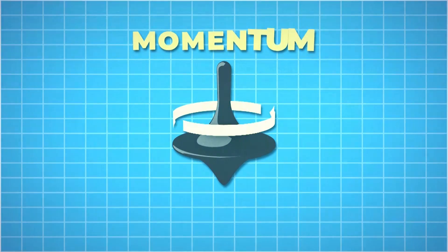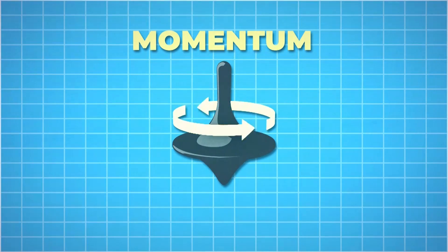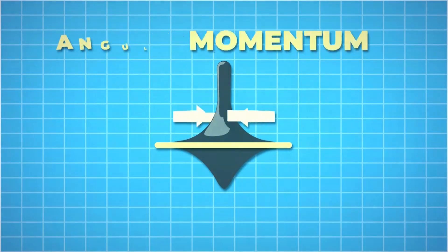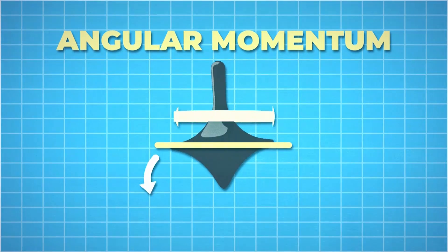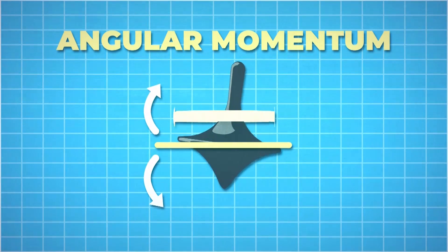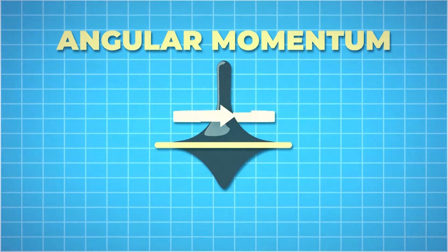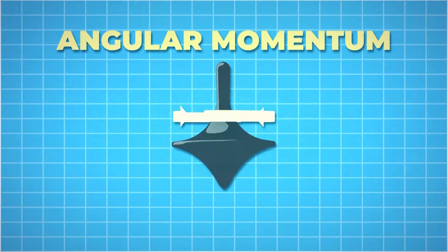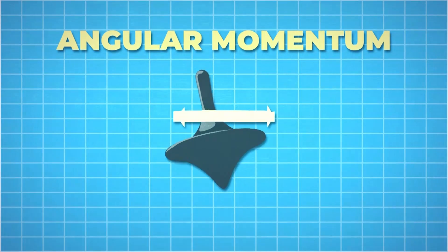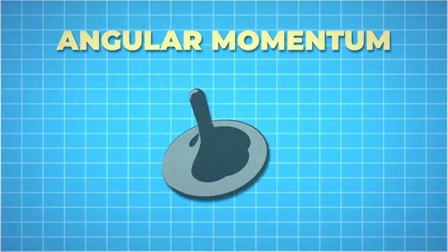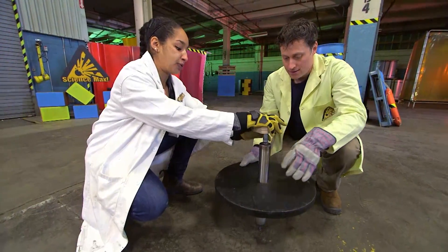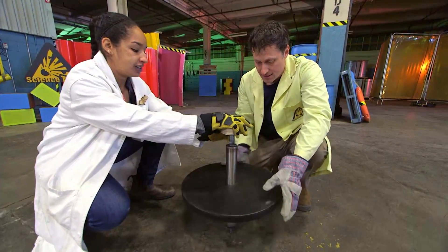A bowling ball rolling along would need another force to make it change direction — we say it has momentum. A top doesn't go in a straight line, it spins, but it still has momentum. Even though it's spinning, it wants to go in a straight line — we call this angular momentum. To make the top move sideways would take an outside force, so it stays upright as long as it has enough momentum. When it slows down, there's less momentum and gravity eventually makes it topple.